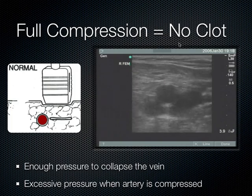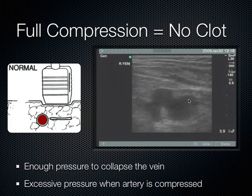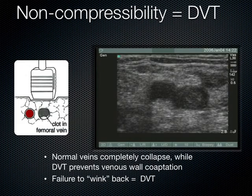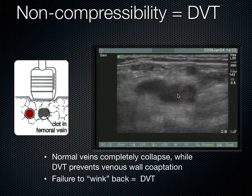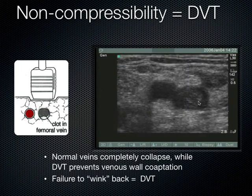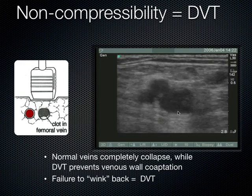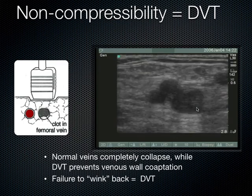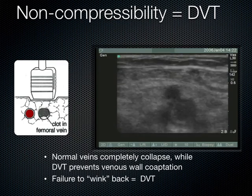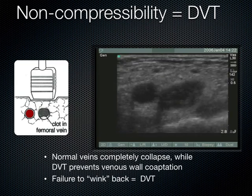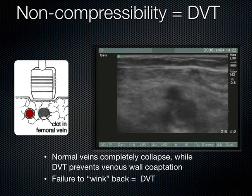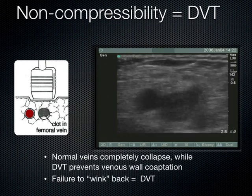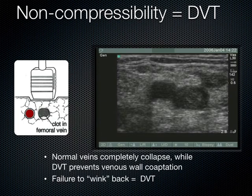Start compression at the most proximal location where the saphenous vein is confluent with the common femoral vein, then march distally. Good full compression means no clot. You're pushing too hard when the arteries start to compress. If a clot is present, echogenic material is visible in the lumen of the vein and the walls do not coapt on compression. Once you confirm a clot, stop compressing — excessive compression of DVT risks dislodging it and causing a pulmonary embolism.